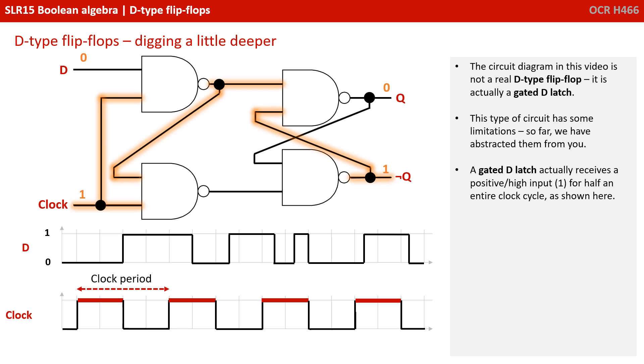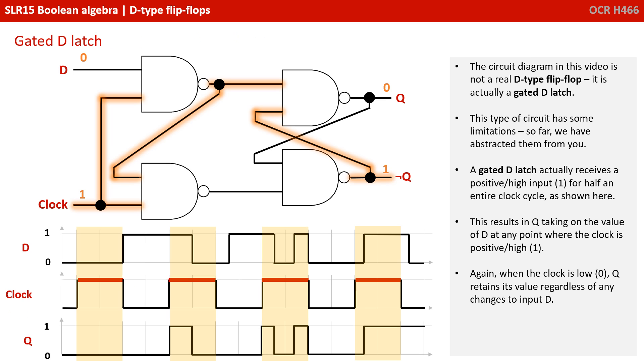A gated D-latch actually receives a positive high input of 1 for half an entire clock cycle, as shown here. This results in Q taking on the value of D at any point where the clock is positive or high. When the clock is low, 0, Q retains its value, regardless of any changes to input D.